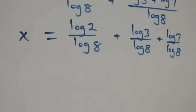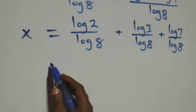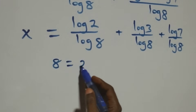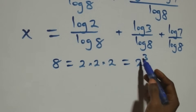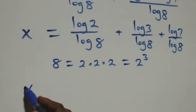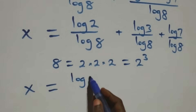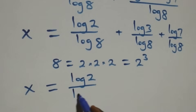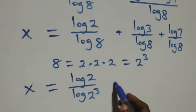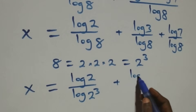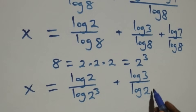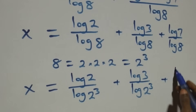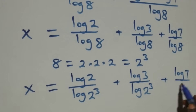We can write 8 as 2 times 2 times 2, which is the same as 2 cubed. So we have x equals log 2 over log 2 cubed, plus log 3 over log 2 cubed, plus log 7 over log 2 cubed.